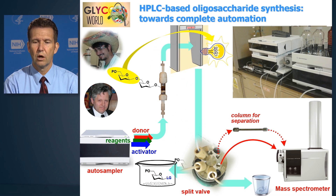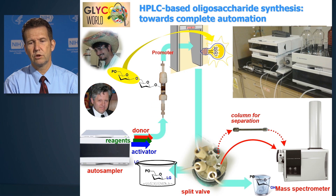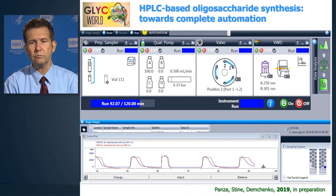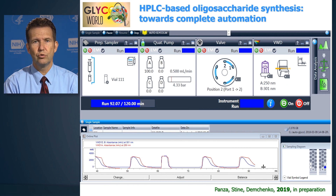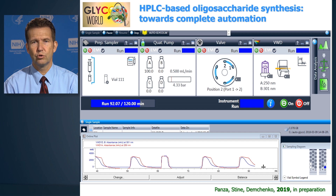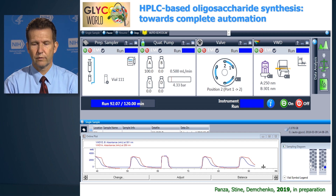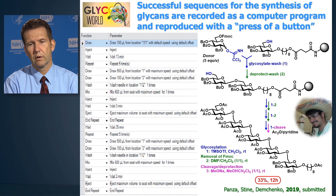Using column chromatography for separation is also one of the possibilities. It's a very user-friendly system — Windows-based software that shows different components such as prep, auto-sampler, pump, valve, and detector. The detector allows you to monitor what's happening in your reaction using different wavelengths.